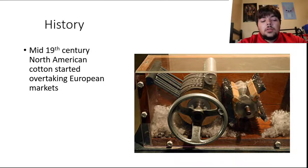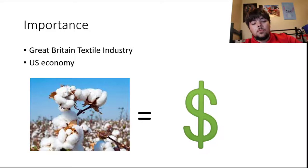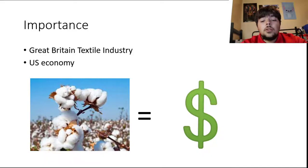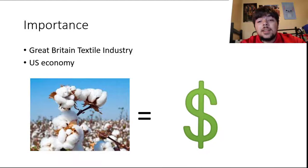The cotton gin model from the 19th century, made by Eli Whitney, shown in the picture on the right, allowed for the easy separation of seed from the cotton boll. This increased the production of cotton but also increased the number of Africans who became slaves in the cotton industry. The importance of cotton in the early US economy was due to Great Britain's growing textile industry demand, and the southern US states supplied it, making it the backbone of the US economy in the 19th century.